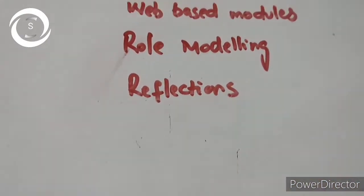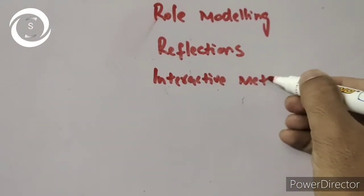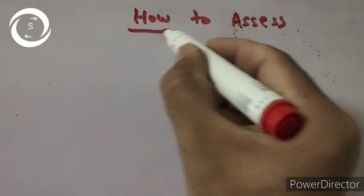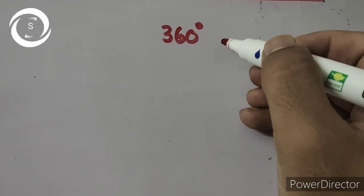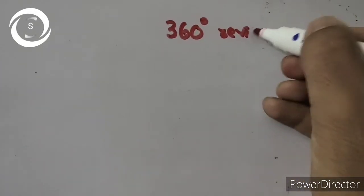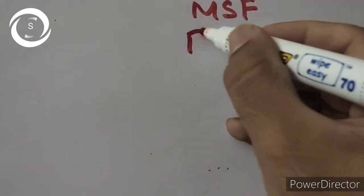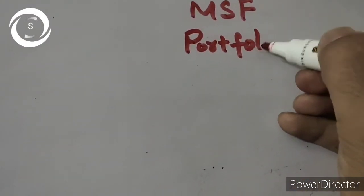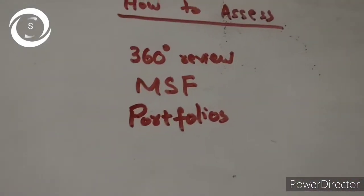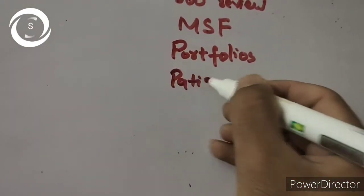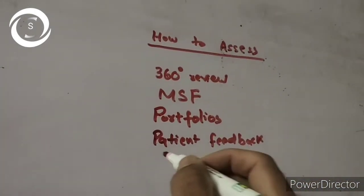How to assess professionalism? Multiple assessment tools must be used like multi-source feedback using 360-degree reviews, patient feedback, and critical incident reports. Data regarding professional conduct is collected throughout a career. Data generated by these tools can be used to create a professionalism portfolio, the totality of which represents a picture of an individual's professionalism. This portfolio can be used for formative and summative feedback. Data from this can also be used for developing professionalism curriculum and generating research hypotheses.